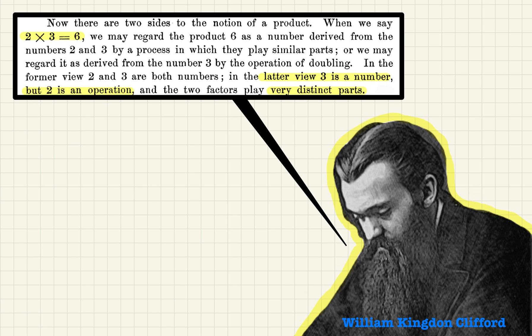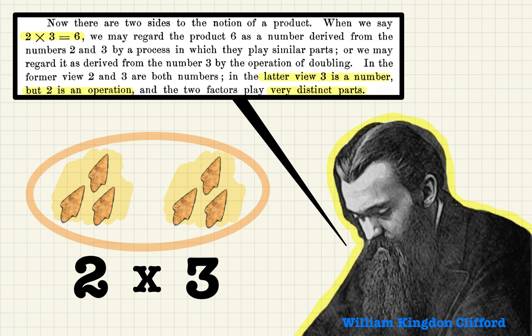Now let's fast forward to year 1878. In this article, Applications of Grassmann's Extensive Algebra, William Kingdon Clifford writes: 'Now there are two sides to the notion of a product. When we say 2 times 3 equals 6, we may regard the product 6 as a number derived from the numbers 2 and 3 by a process in which they play similar parts. Or we may regard it as derived from the number 3 by the operation of doubling. In the former view, 2 and 3 are both numbers. In the latter view, 3 is a number, but 2 is an operation. And the two factors play very distinct parts.'